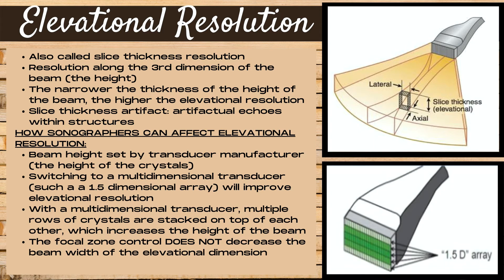Elevational resolution, also known as slice thickness resolution, is resolution along the third dimension of the ultrasound beam — the height of the beam. The narrower the beam thickness, the higher the elevational resolution. Slice thickness artifact creates artifactual echoes within structures. The beam height is set by the transducer manufacturer. Switching to a multidimensional transducer, such as a 1.5 dimensional array, improves elevational resolution by stacking multiple rows of crystals. Note that the focal zone control does not decrease beam width in the elevational dimension.